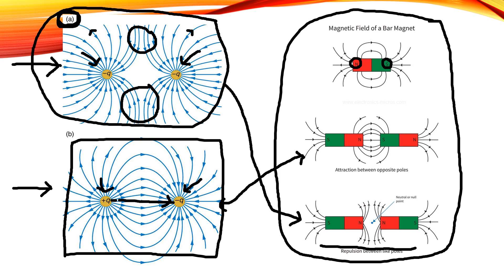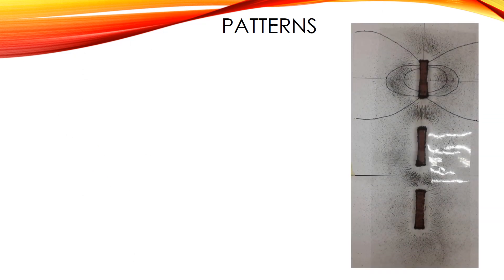One key difference: magnets always come with north and south poles as a pair, but this is not the case for charged particles in electricity. Now let me show you the patterns of several field lines. For the bar magnet, you can see some lines repelling each other and some attracting each other.